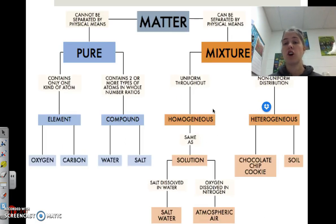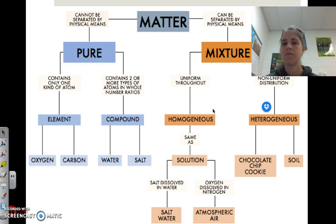So when I'm determining what type of matter everything is, the very first thing I'm going to ask myself is, can I separate it? If I can't separate it by physical means, if I can't actually physically pull it apart, then it's usually pure. If I can separate it, then it is a mixture. Then if it's pure, let's just go down one route.